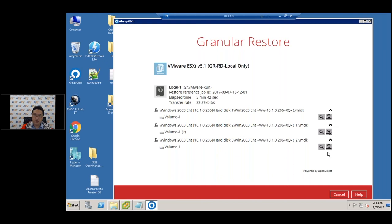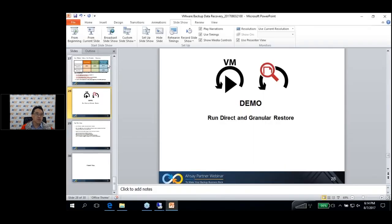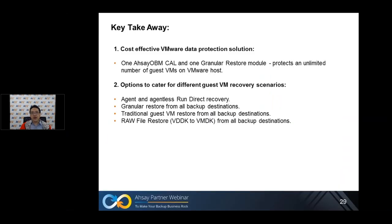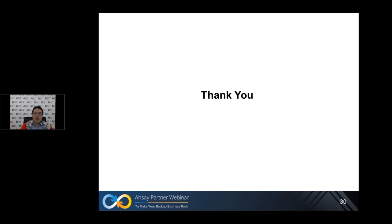You can mount all the drives and access files from File Explorer. This is our demonstration for granular restore. Key takeaways: One — cost-effective VMware data protection: one OBM license and one granular restore module protects an unlimited number of guest VMs on a VMware host. Two — options to cater for different guest VM recovery scenarios: agentless RunDirect recovery, granular restore from all backup destinations, traditional guest VM restore from all backup destinations, raw file restore, and VDDK to VMDK restore from all backup destinations. Thank you everyone for joining us. Hope to see you next time on our next webinar. Stay tuned.